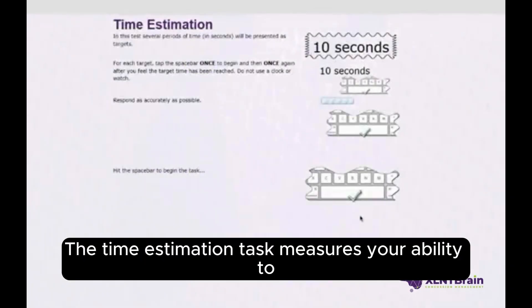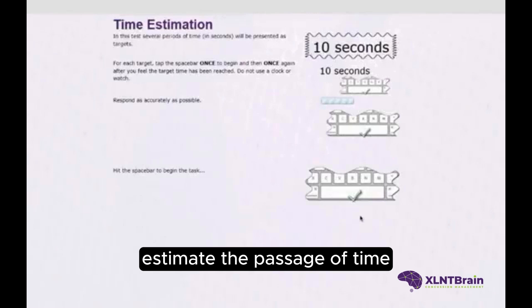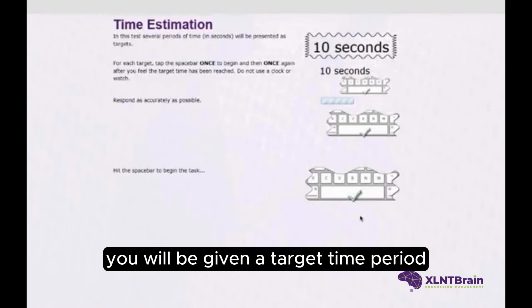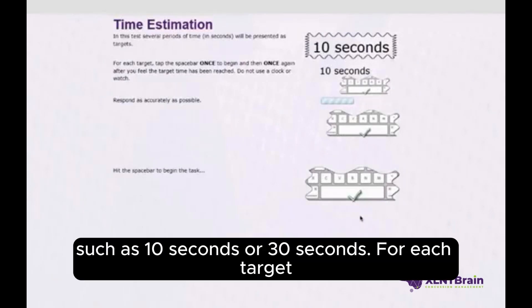The Time Estimation Task measures your ability to estimate the passage of time. You will be given a target time period, such as 10 seconds or 30 seconds.